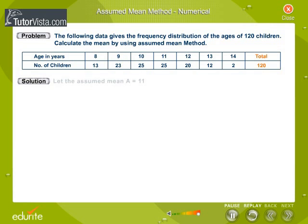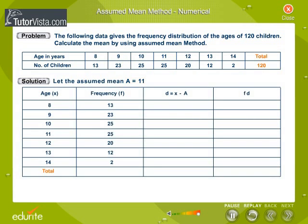Solution: Let the assumed mean A equal 11. The ages of the children denoted as X and the number of children, that is the frequencies denoted by F, are tabulated as shown in the tabular column.